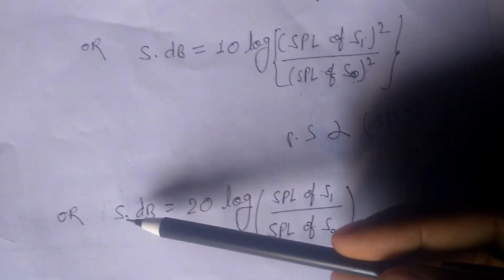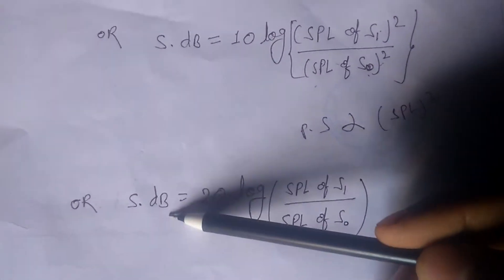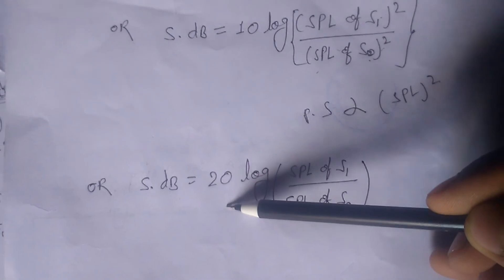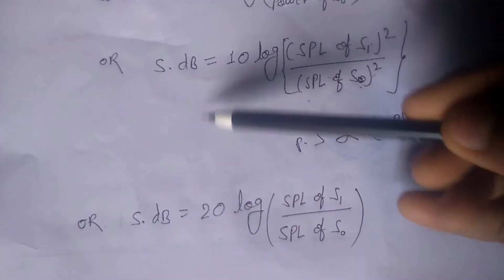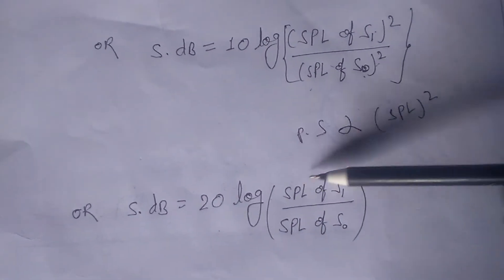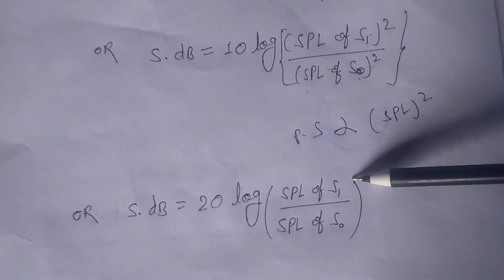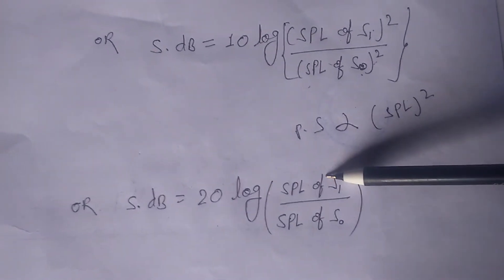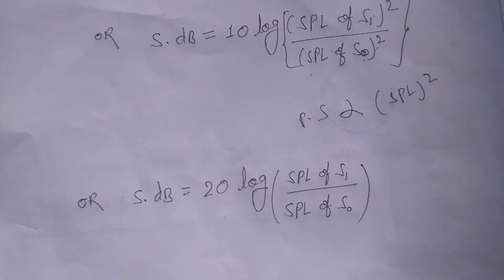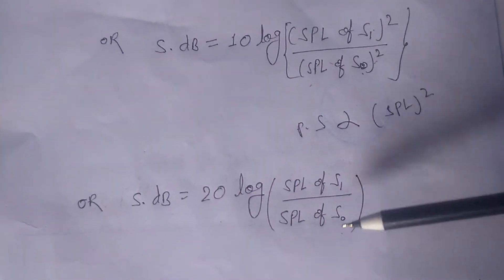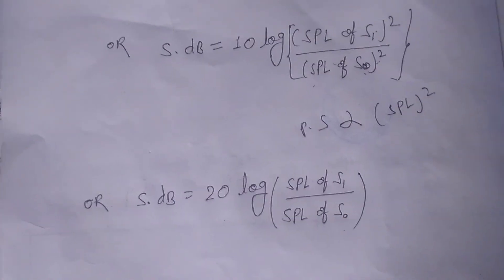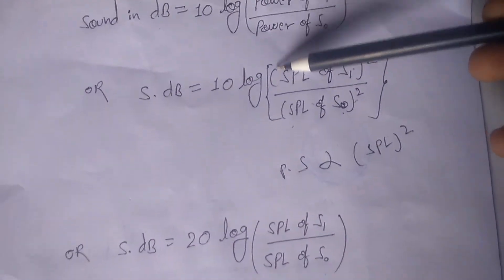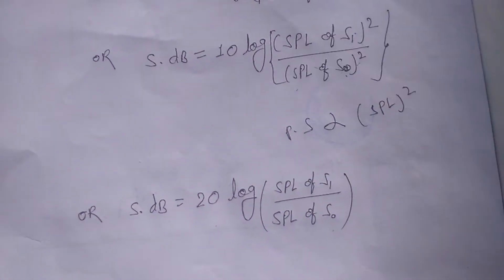Now another formula: sound in decibel equals 20 log — here it is 20, not 10 — 20 log of SPL of S1 divided by SPL of S0, where S1 is the sound being described and S0 is the reference. You can use any one of these formulas to determine the decibel level of any sound.